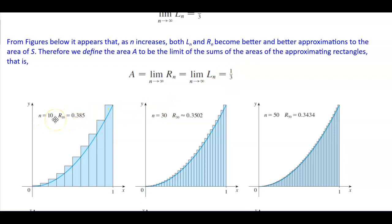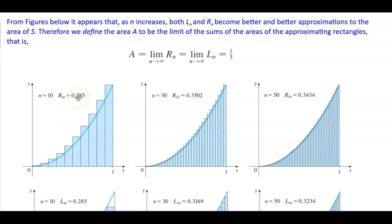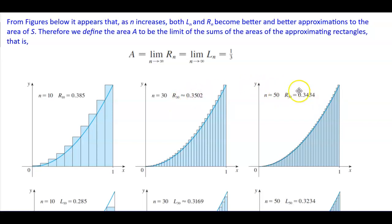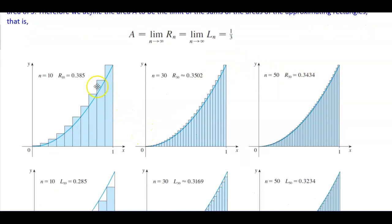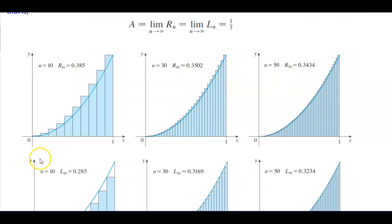When n is equal to 10, R subscript 10 is equal to 0.385. When n is equal to 30, R subscript 30 is equal to 0.35, and when we increase it to 50, we get 0.34. So it's getting closer and closer to 1/3 — this number is getting smaller and closer to that value.